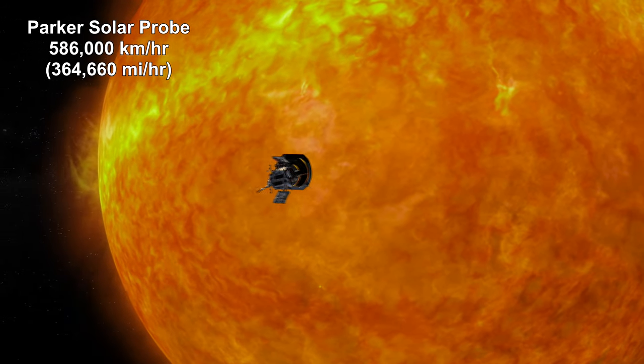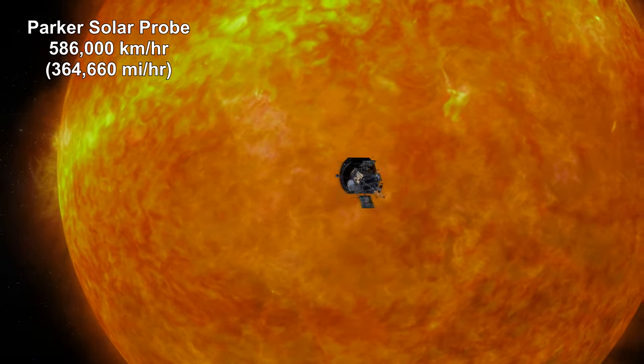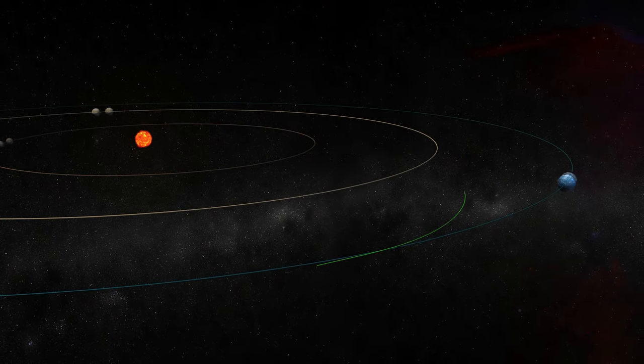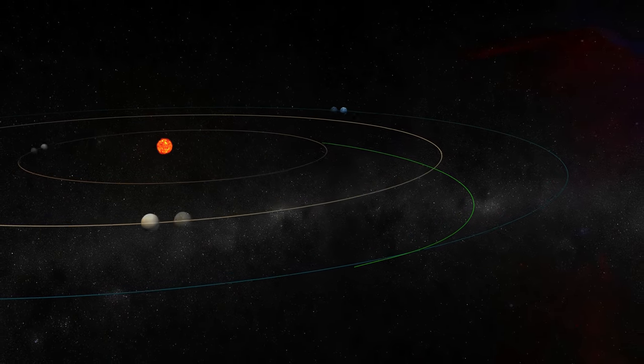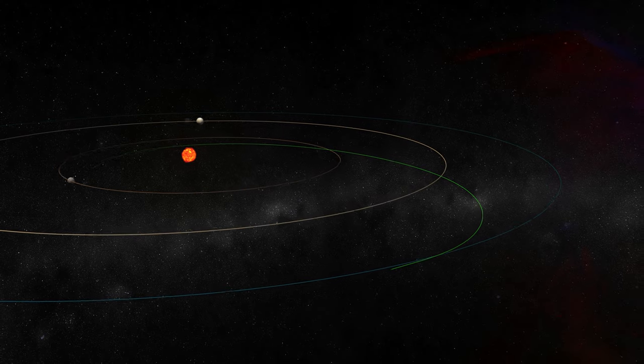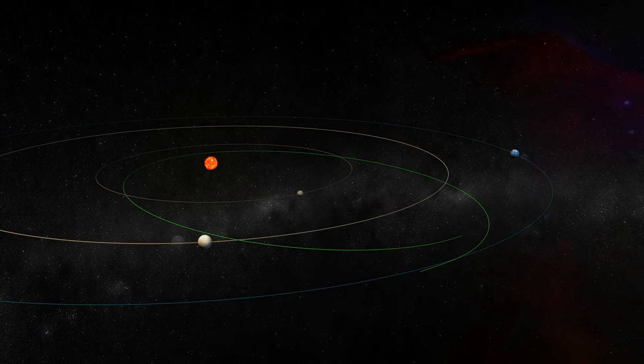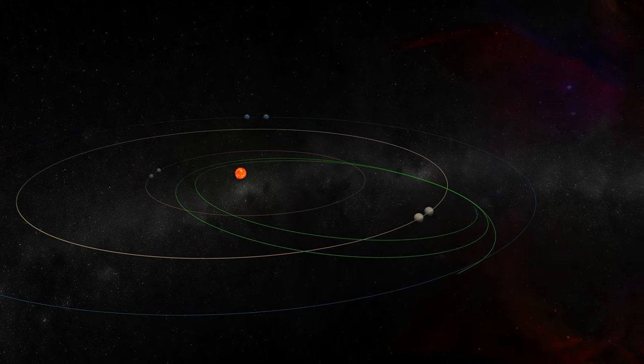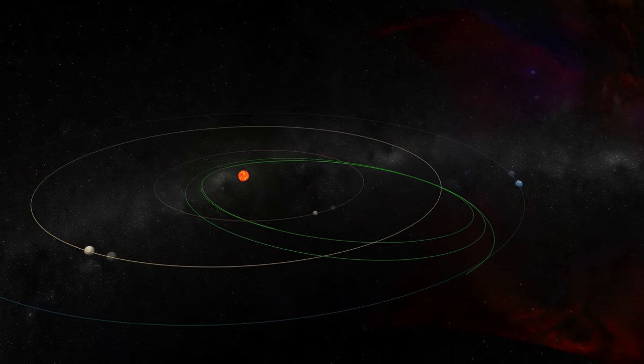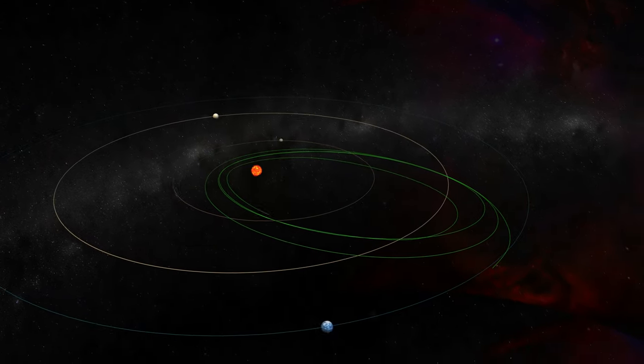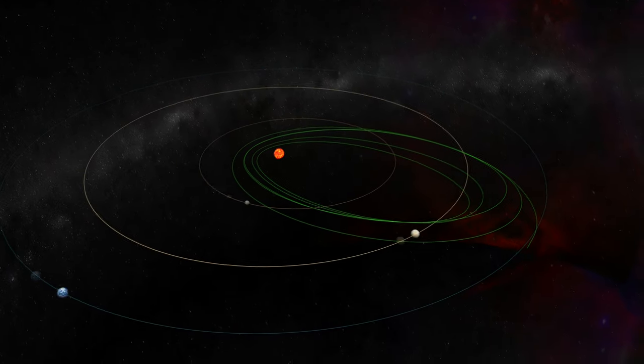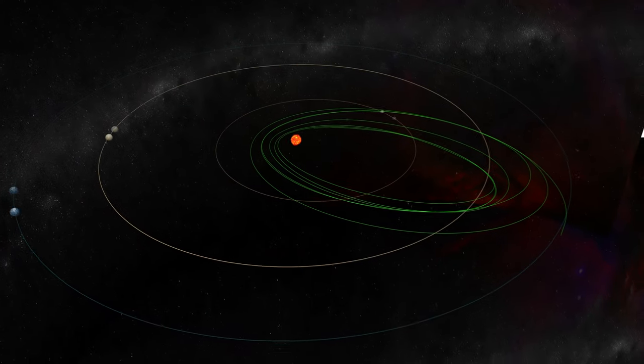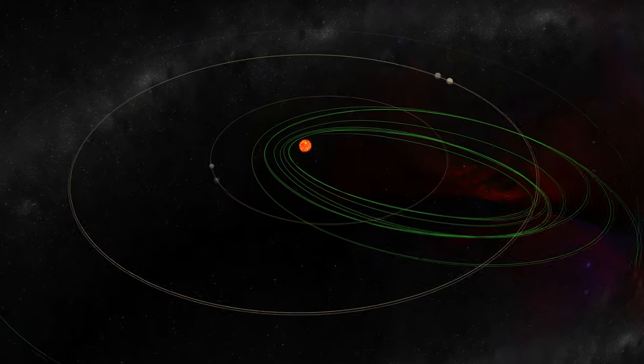It reached this speed after getting a gravity assist from Venus a month earlier. This is the first time in history a spacecraft has touched the Sun's corona, where it sampled particles and measured its magnetic fields. This record is expected to stand until September of 2023, when the probe will beat its own record on its 17th orbit of the Sun.